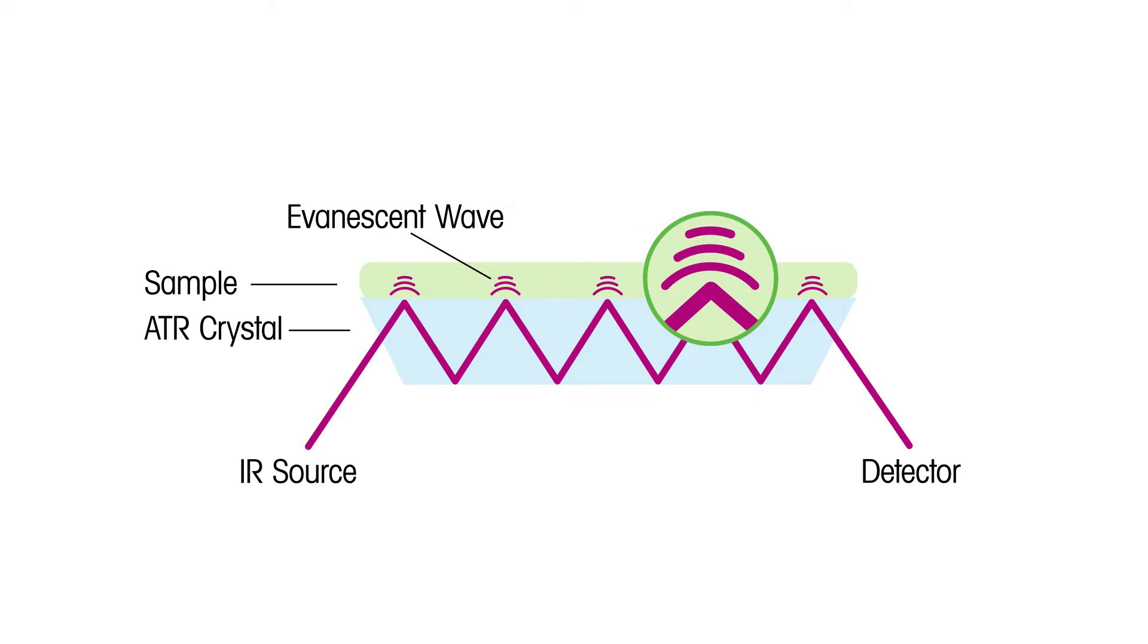This evanescent wave is key to how ATR is able to provide the user vibrational or chemical information about the sample of interest. This wave penetrates into the sample a given amount and is dictated by several things. This depth of penetration is important because it is related to your path length. There are two main variables that penetration depth are dependent on.